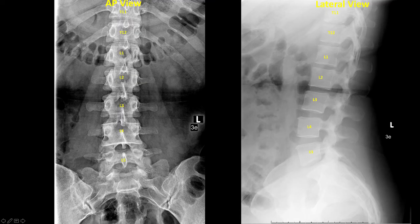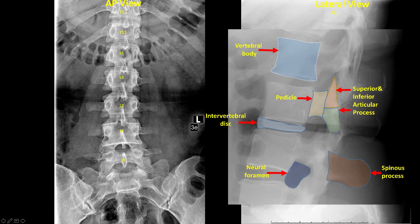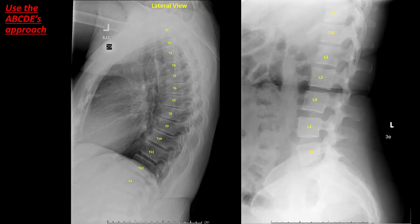The standard views used in lumbar spine assessment are the AP view and the lateral view. In the AP view, identify the vertebral body, intervertebral disc, pedicle, transverse process, and spinous process. In the lateral view, again identify the vertebral body, intervertebral disc, pedicle, superior and inferior articular process, spinous process, and the neural foramen.